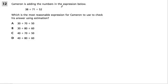Cameron is adding the numbers in the expression below. So here's the numbers they're adding: 38 plus 71 plus 52. Which is the most reasonable expression for Cameron to use to check his answer using estimation?